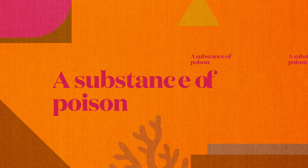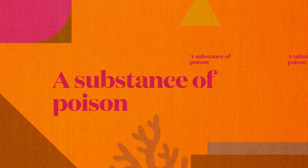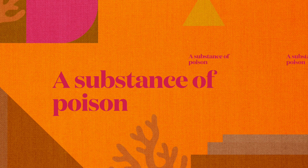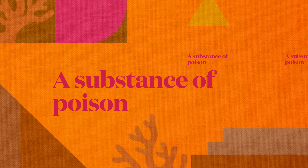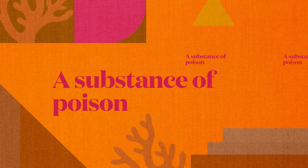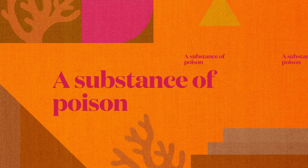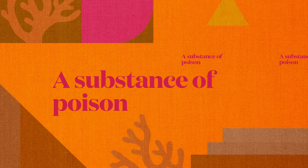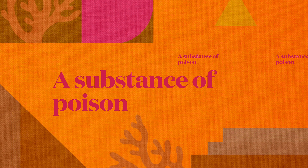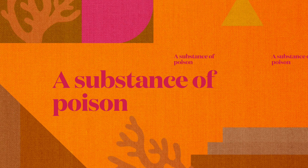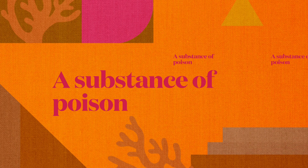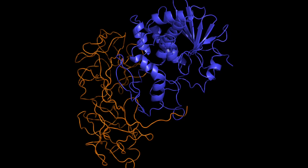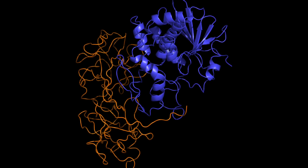Welcome to our program. Today we will be discussing the deadly poison ricin. Ricin is a highly toxic protein derived from the seeds of the castor oil plant, which is native to Africa but is now grown around the world, including the United States. Ricin is known to be one of the most poisonous substances in the world, and even a small amount of it can be lethal to humans.